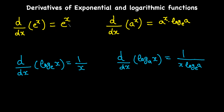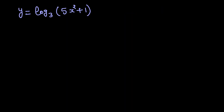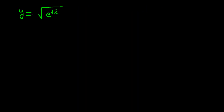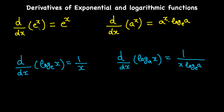In this video I'm going to go over derivatives of exponential and logarithmic functions. We're going to go over the basic rules and then work on a couple of examples to use those rules. So the derivative of e to the x is basically just e to the x times the derivative of x, which is dx over dx, giving us one.